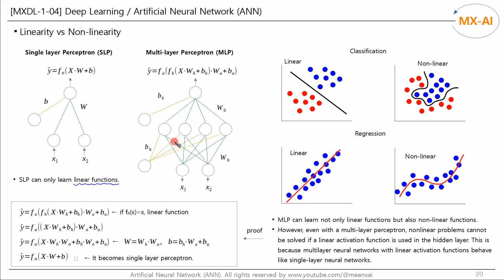A multi-layer perceptron is a neural network with hidden layers. It can learn not only linear functions but also non-linear functions. For classification, it can generate a non-linear decision boundary, and for regression, it can create a non-linear regression curve. In machine learning, Support Vector Machines used kernel tricks to generate non-linear boundaries, but using a multi-layer neural network, we can create them without using complex concepts such as kernel functions. In most cases, real-life data is non-linear, so multi-layer neural networks are often used.